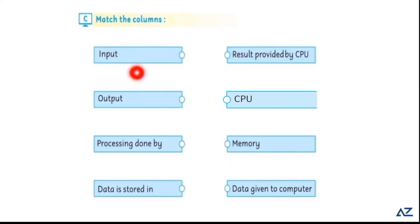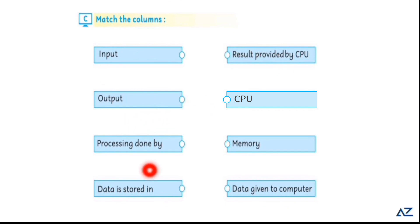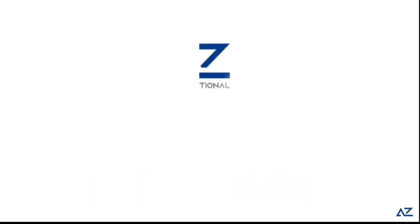Match the columns: input — data given to the computer; output — result provided by CPU; processing — done by CPU; storage — data is stored in memory.